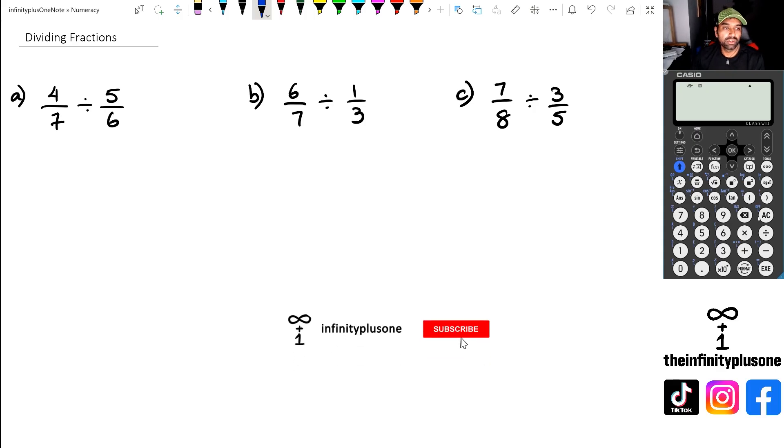All right, so let's have a look at question A here. So what we've got here is four sevenths divided by five sixths. Now, the simplest way to divide by fractions is actually multiply the first fraction with the reciprocal of the second fraction.